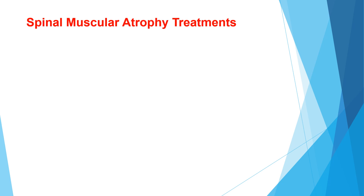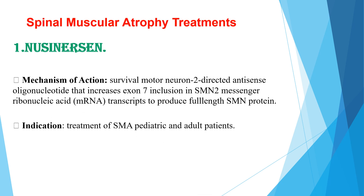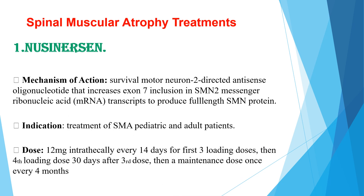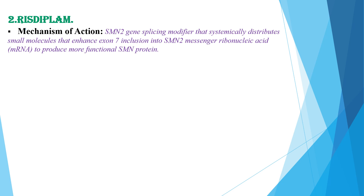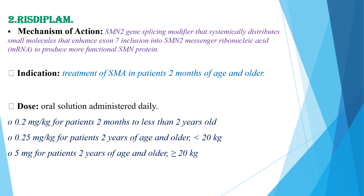When we see spinal muscular atrophy treatments, there are currently different licensed treatment options. The first is nusinersen. Its mechanism of action involves a survival motor neuron 2-directed antisense oligonucleotide that increases exon 7 inclusion in SMN2 pre-messenger RNA transcript to produce full-length SMN protein. It is indicated for treatment of SMA in pediatric and adult patients and is administered intrathecally. The other treatment is risdiplam, which is also indicated for treatment of SMA in patients two months of age and older, and is available as an oral solution administered daily orally.